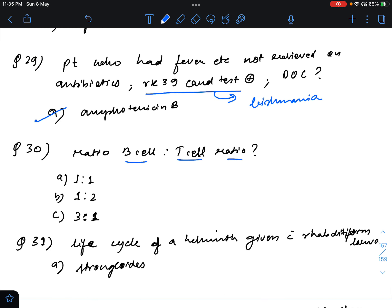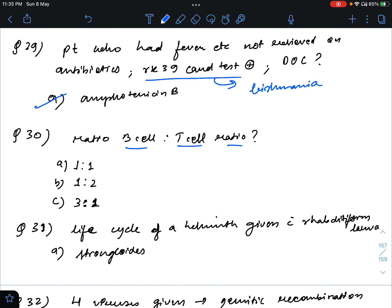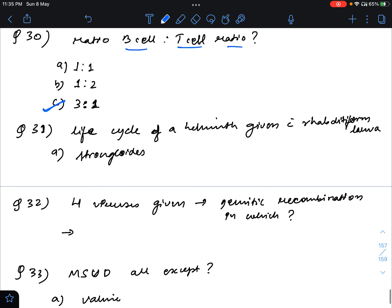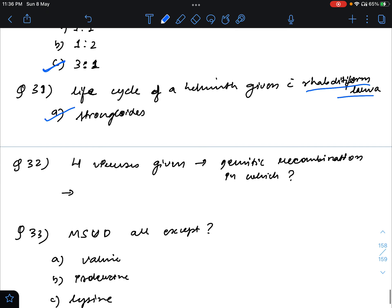Now, ratio of B-cell and T-cell ratio in our body. There are options like 1 is to 1, 1 is to 2, but the correct answer is 3 is to 1. Question 31: life cycle of a helminth was given. And after it was released from the stool, there was rhabditiform larva. So the answer to this is most probably Strongyloides because as we know that Strongyloides is ovoviviparous, so immediately larva is formed, rhabditiform larva, so Strongyloides should be the answer.